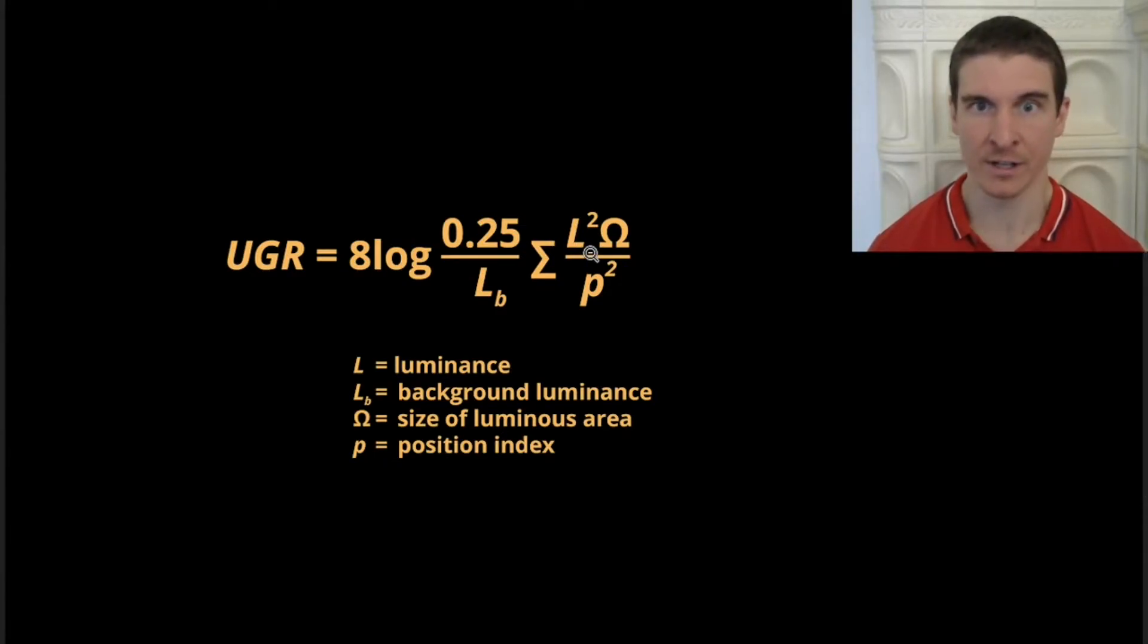If we decrease the size of the lamp while keeping luminous flux constant, then we increase luminance, and because of that, eventually we increase glare. Again, luminance contributes exponentially.